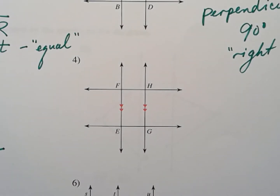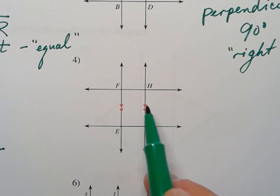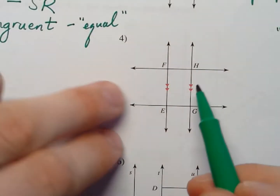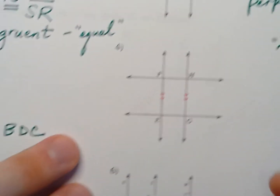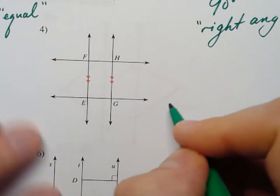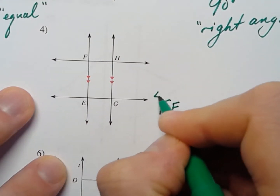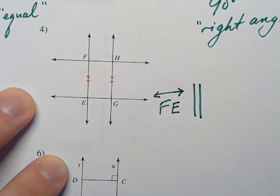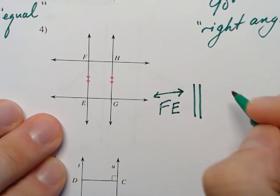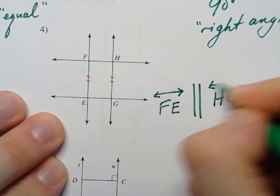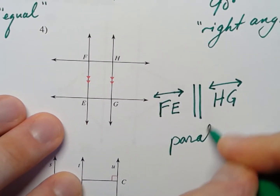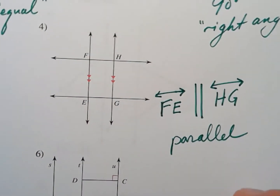Here is one that has these little red marks that almost look like a little fast-forward or video play button if you turn it sideways. What that means is that they are parallel — these two lines are parallel. So we would say that line FE is parallel to HG. It's kind of a self-explanatory symbol. This means they have the same slope and they never cross.